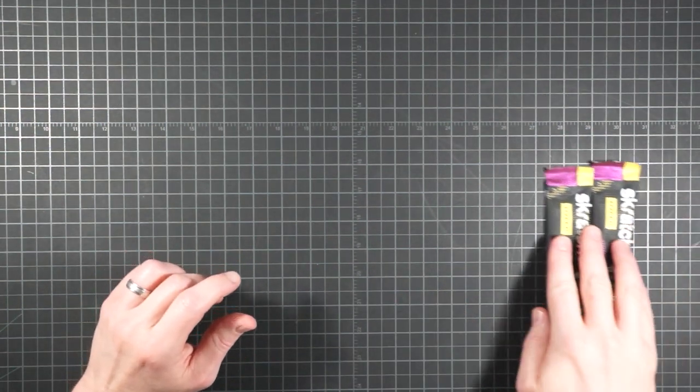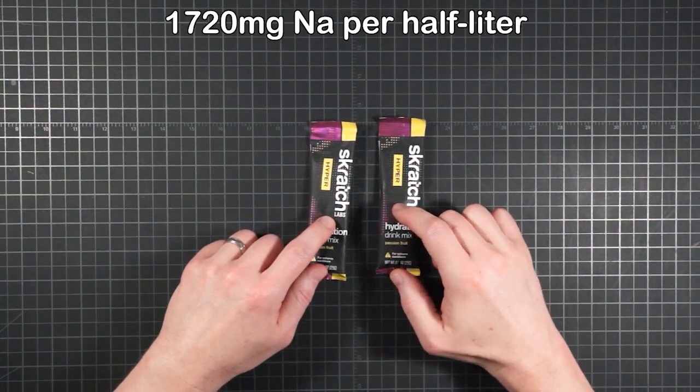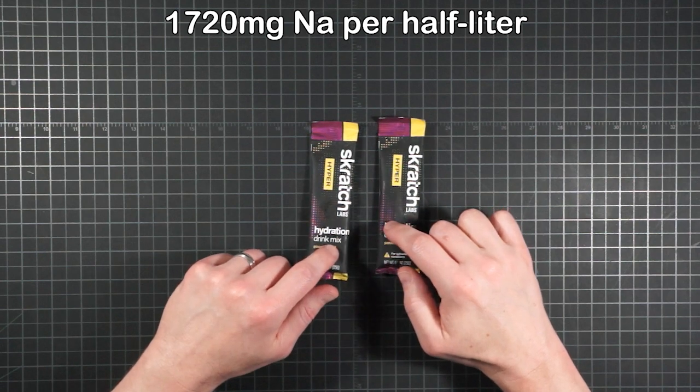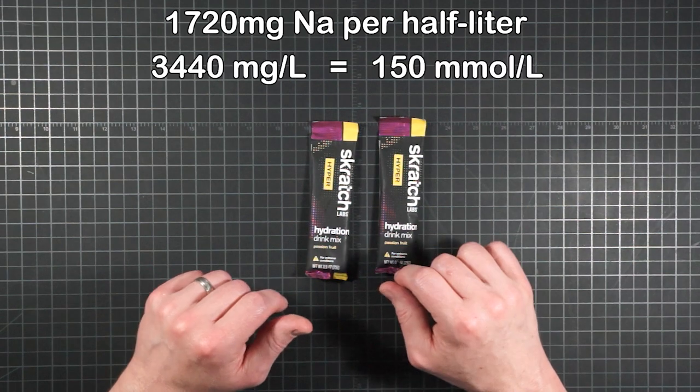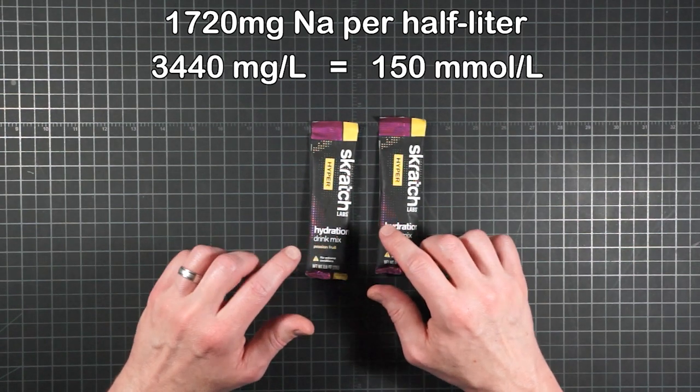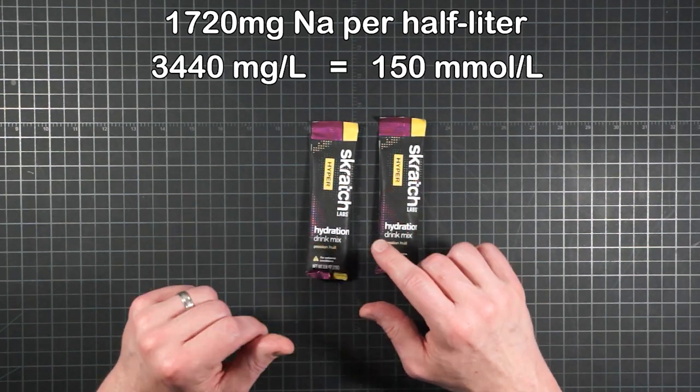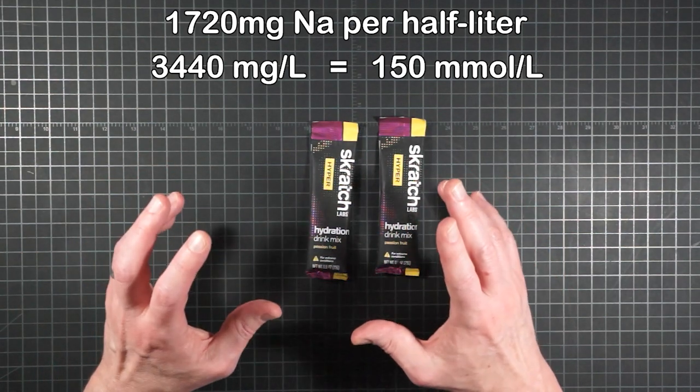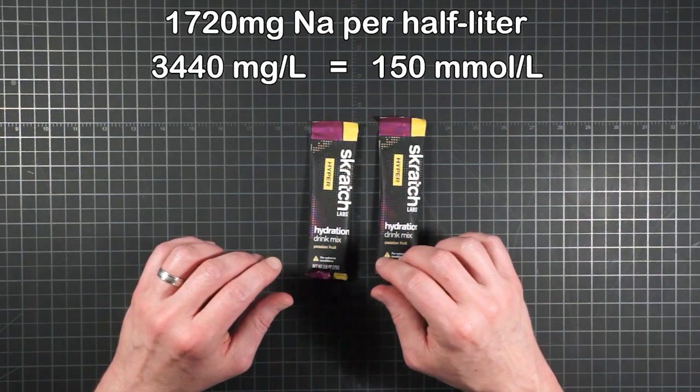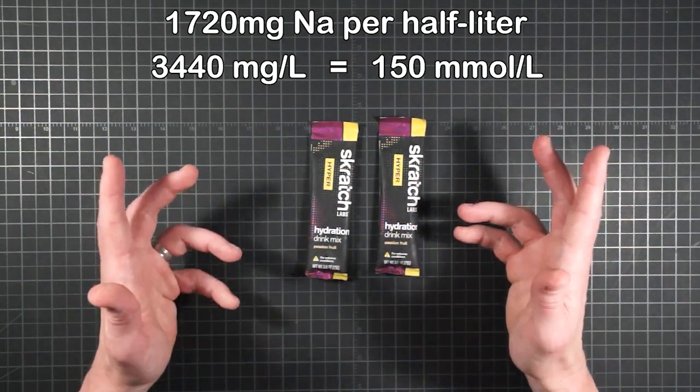So for reference, those Scratch Labs hyperhydration packets contain 1720 milligrams of sodium and are recommended for 16 ounces or half liter of water. And that would make a full liter of solution with 3440 milligrams of sodium, which equates to concentration of 150 millimoles per liter. Good performance benefit, but getting into diarrhea territory for some.